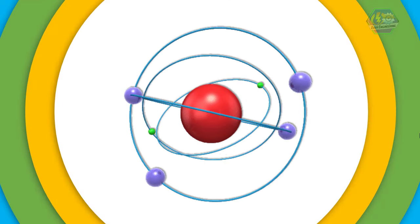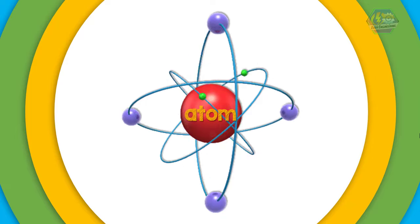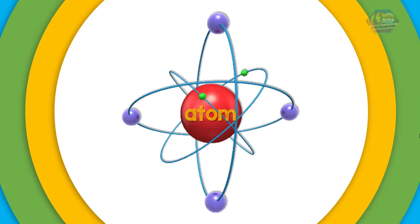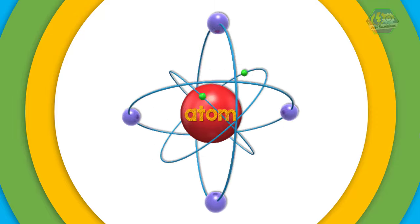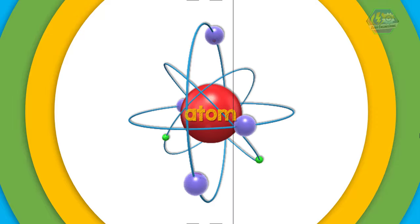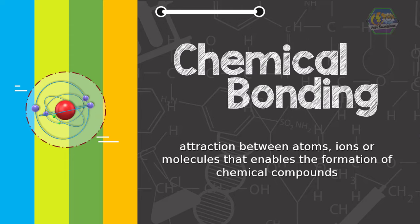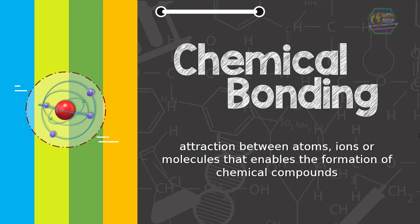In chemistry, these particles are composed of atoms, and these atoms are bonded with other atoms through sharing or exchanging of electrons. Basically, chemical bonding is the attraction between atoms. Ions or molecules enable the formation of chemical compounds.